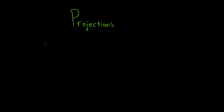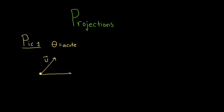In this video I want to talk about projections. I'm going to show you what they actually are intuitively and then we're going to do a simple example. So let's look at two pictures. In the first picture, theta is an acute angle. We have a vector which we'll call u, then another vector which we'll call v, and another vector which we'll call w2. The idea is you have this vector u and you're projecting it onto v — if you think of it as collapsing down onto v, you would get another vector which I'll call w1.